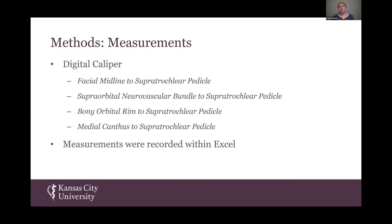To triangulate a danger zone surrounding the supratrochlear artery pedicle, four measurements were taken. The midline to supratrochlear pedicle, previously described as 1.7 to 2.2 centimeters, served as our control. We also measured the supraorbital neurovascular bundle to the supratrochlear pedicle, the bony orbital rim to the supratrochlear pedicle, and the medial canthus to the supratrochlear pedicle. All measurements were recorded in Excel.